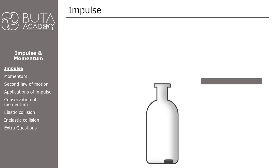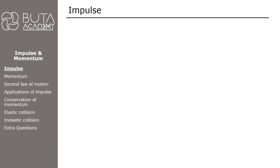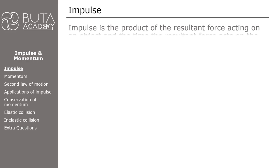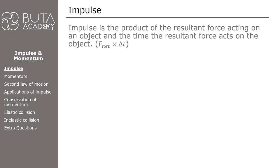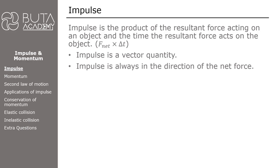These two examples show us that the time of impact of a force on an object is as important as the amount of that force. The physical quantity representing this relation is called impulse. Impulse is the product of the resultant force acting on an object and the time this force acts on the object. Impulse is a vector quantity, meaning in exams we have to specify its direction as well. It always acts in the direction of the net force.